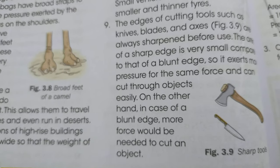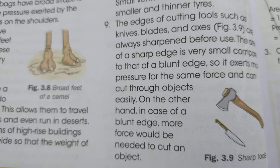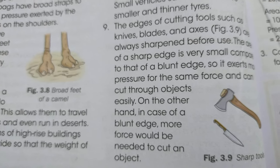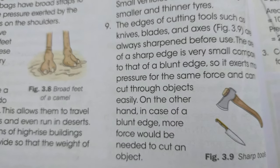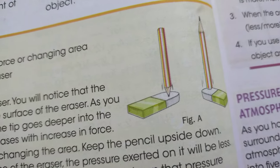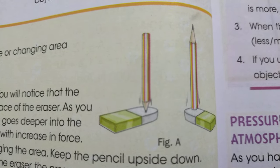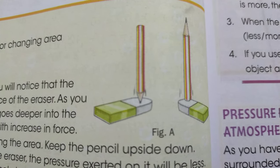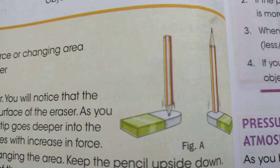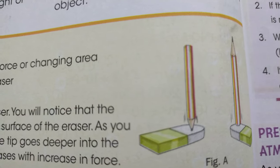Knife edges should be sharp so that area is less and it is easy to cut vegetables or any object. There is also an activity: a pencil cannot stand stably on its pointed tip because the small area gives less stability, while the same pencil can stand easily on its wide base. More area gives more stability; less area gives less stability and the object is more prone to falling.